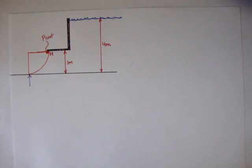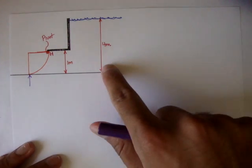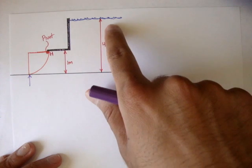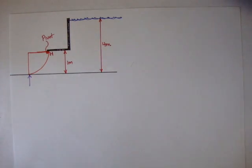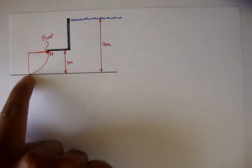I'll read the question. The homogeneous gate consists of a quarter circle cylinder and is used to maintain a water depth of 4 meters. When the water level exceeds 4 meters, so when the water level here goes above 4 meters, obviously the pressure increases.